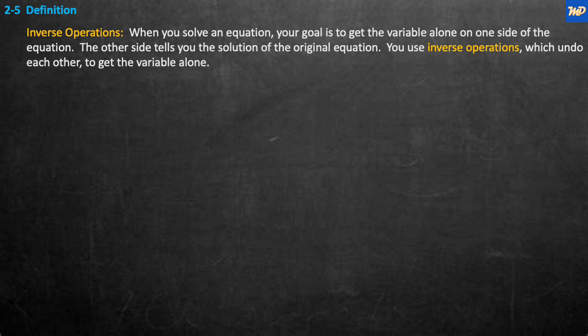Before we get started, we'll talk about a definition called inverse operations. When you solve an equation, your goal is to get the variable alone on one side of the equation. The other side tells you the solution of the original equation. You use inverse operations, which undo each other, to get the variable alone.